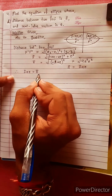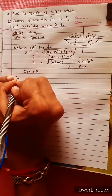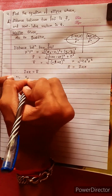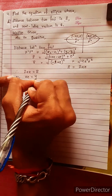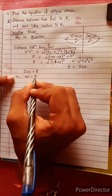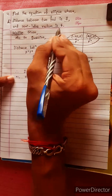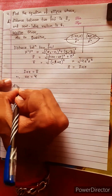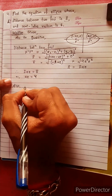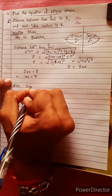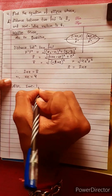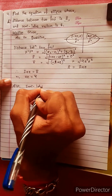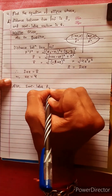Therefore, 2ae = 8, so ae = 4. Also, the semi-latus rectum is 6.